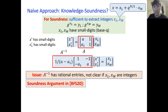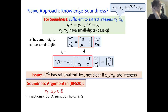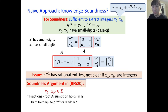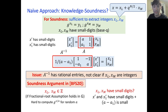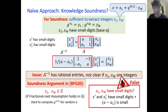Bunz et al. encountered the same problem and here's how they handle it. They argue that X_L and X_M have to be integers, otherwise the computational assumption they assume on their group is broken — specifically the fractional root assumption, which says that it's hard to compute G to the X over A for random A. This is a slightly funky assumption, but let's go with it. So we have X_L and X_M are integers. Now, do they have small digits? The argument in Bunz et al. is that X prime and X_1 prime have small digits and lambda minus lambda_1 is small, therefore X_L and X_M must be small. And this turns out to be false.